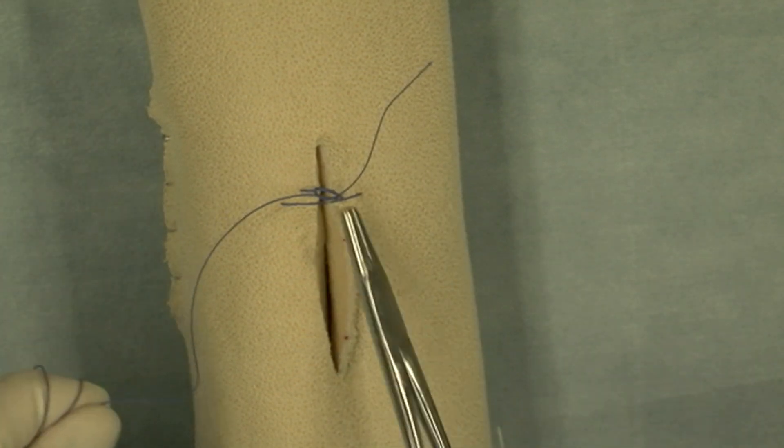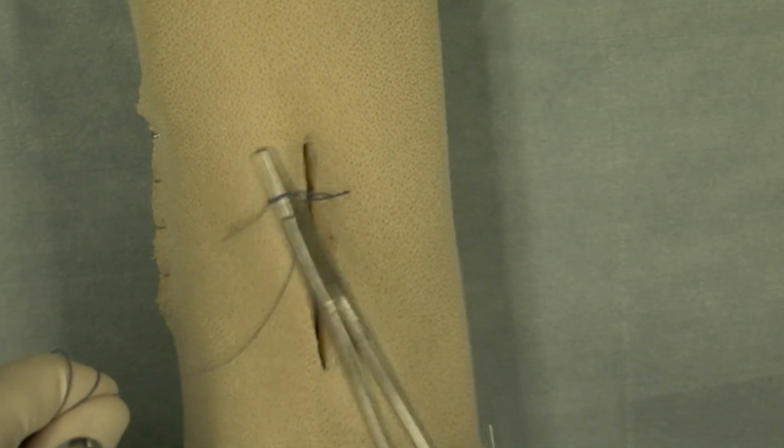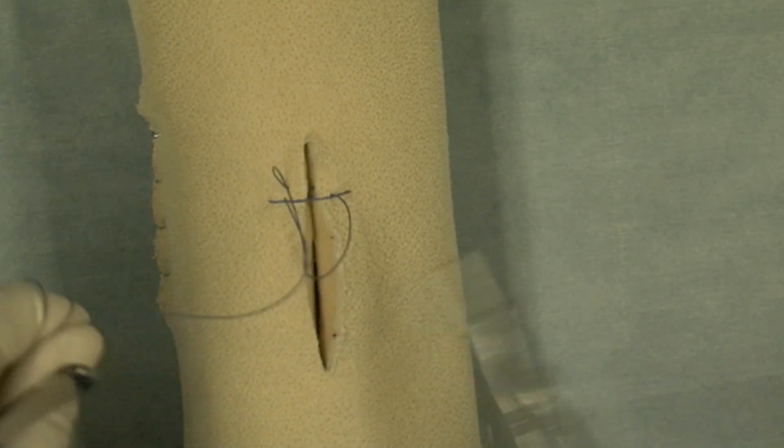Now I'm using polydioxinone 910 which is commonly known as Vicryl Suture. It's number one in size.